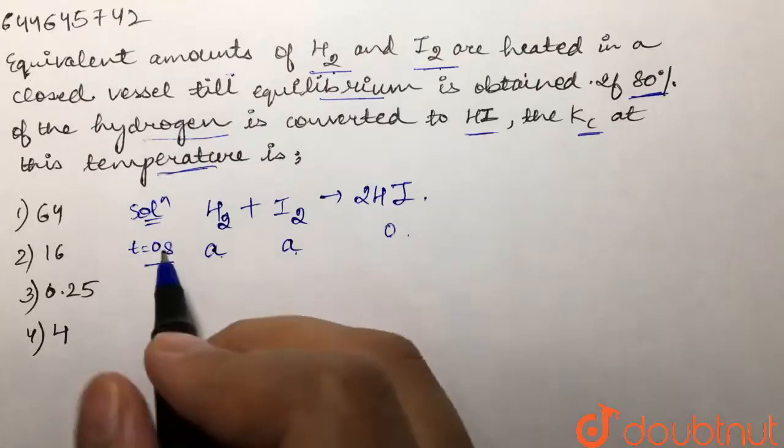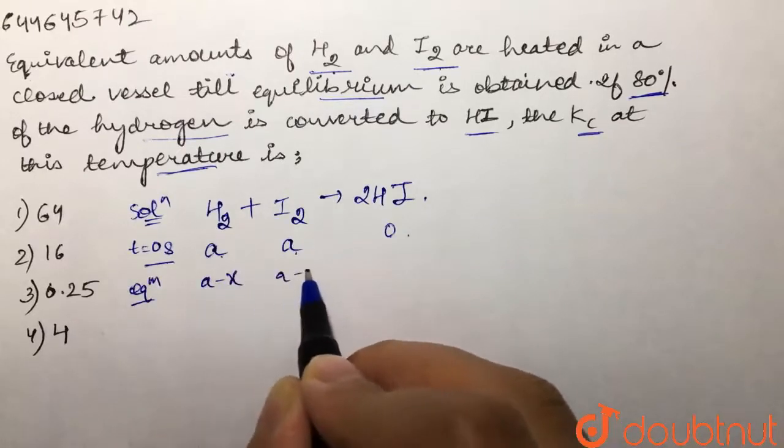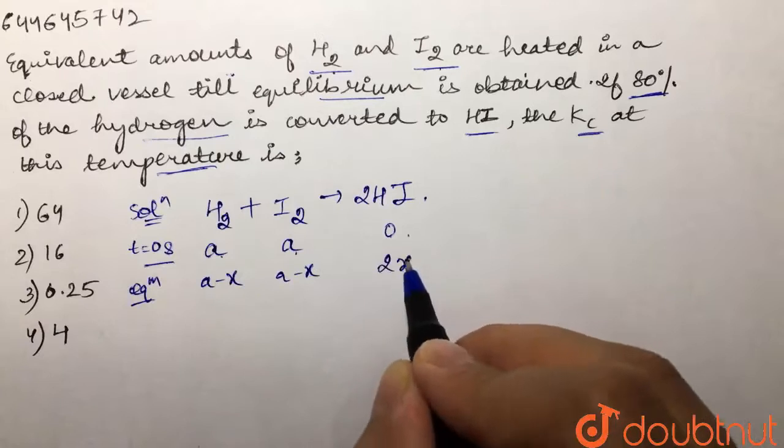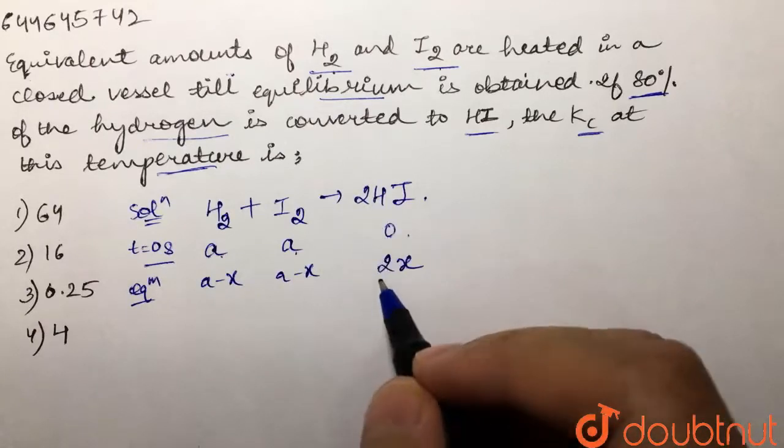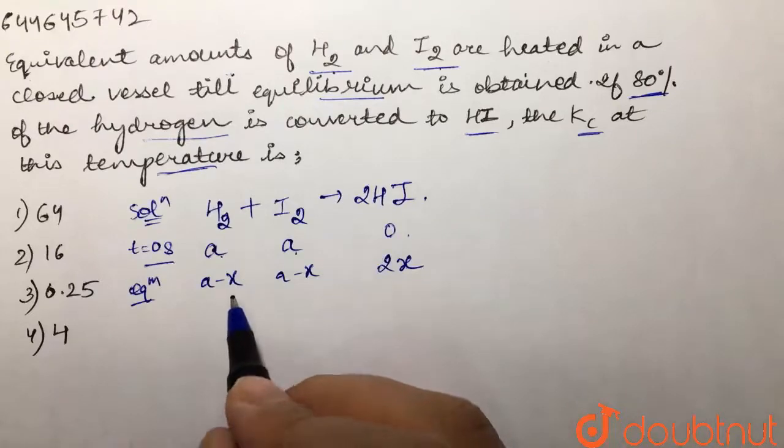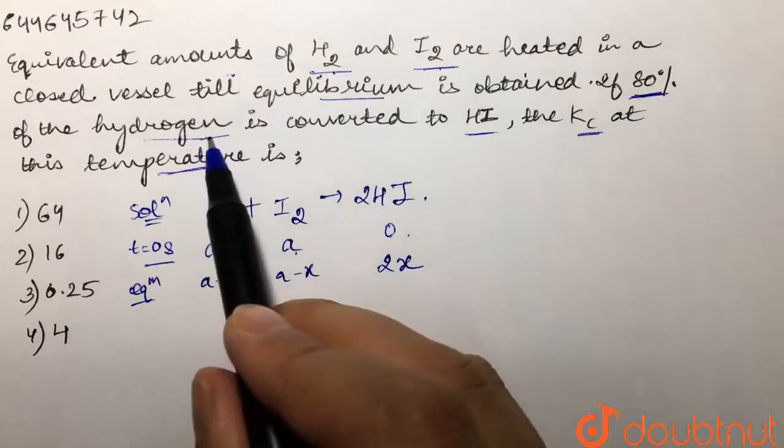At equilibrium, some x would get subtracted from here and here and would be formed over here. 2x would be formed over here because its stoichiometry is 2. Now they are saying that this x value is 80% because 80% of the hydrogen is converted to HI.